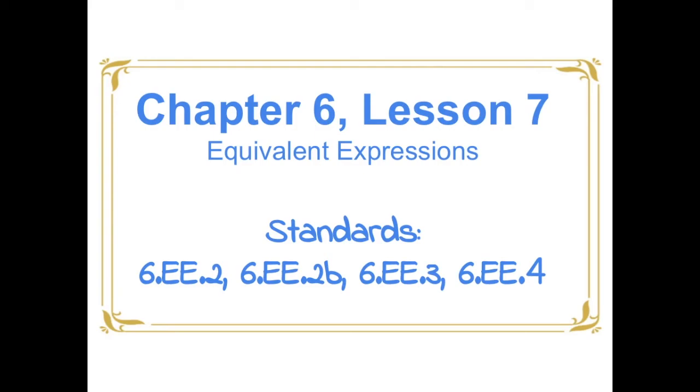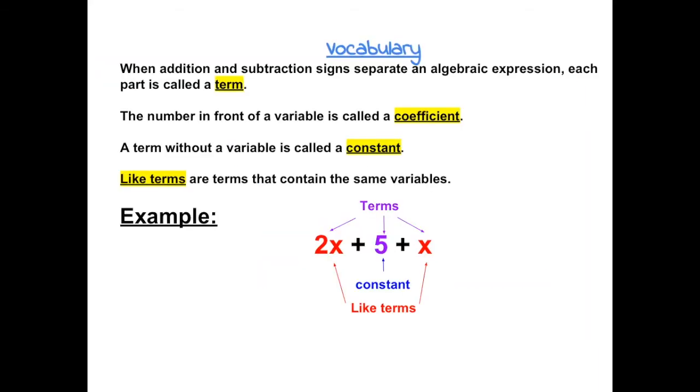Chapter 6 Lesson 7: Equivalent Expressions. When addition and subtraction signs separate an algebraic expression, each part is called a term. So in the example below, 2x is a term, 5 is a term, and x is a term. So there are three terms in this expression.